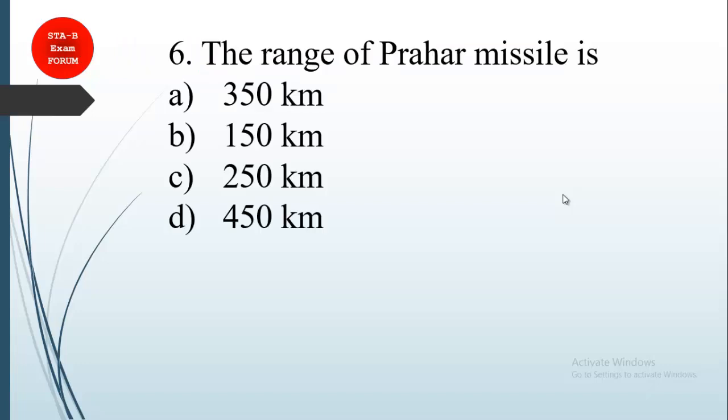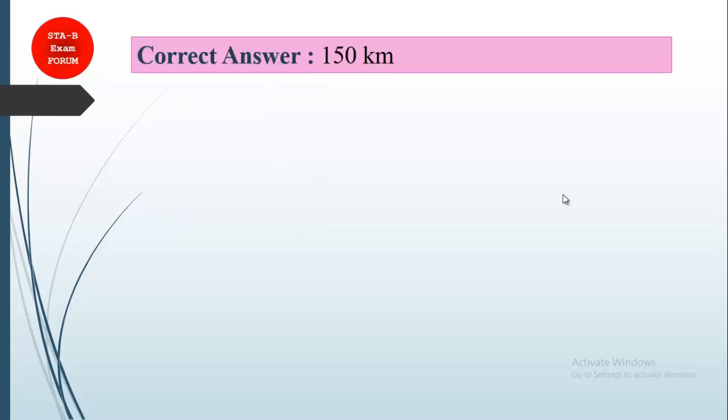The next question asked is: range of Prahar missile. You must know the ranges of all the missiles. So the correct answer for this question is 150 kilometers.